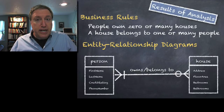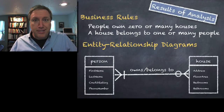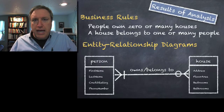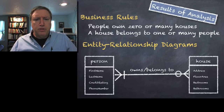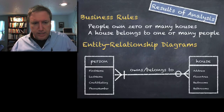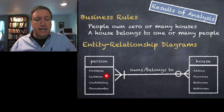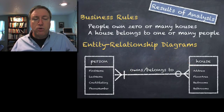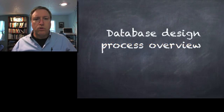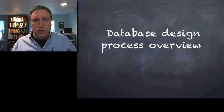As we said in previous screencasts, this course is an overview of the process. So our business rules are very simple and they're focused on the data, its attributes, and the relationships among the entities. The example we're going to use today is simple: we're going to have people who own zero or many houses. A person owns zero or many houses, and a house entity has a set of attributes. We've done this analysis and we're now going to turn this into a table.